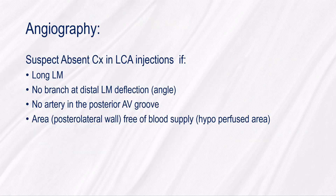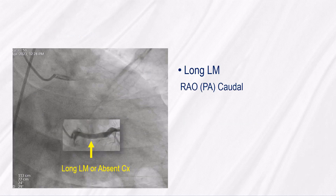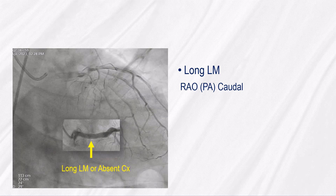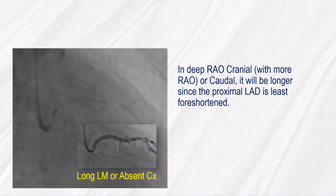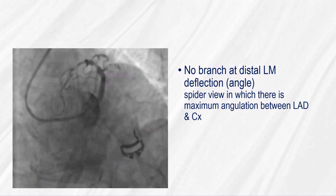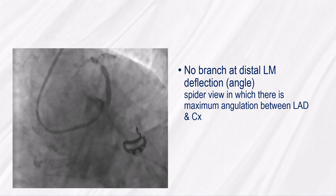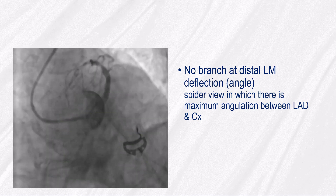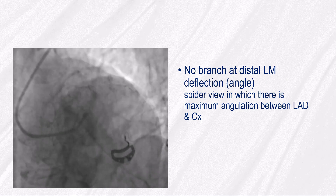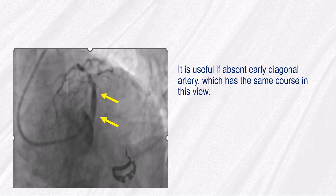In angiography, we suspect the absence of CX in left injections if one of the following is present: a long left main in RAO or PA caudal. In deep RAO cranial with more RAO or caudal, it will be longer since the proximal LAD is least foreshortened. It is also suspected when there is no branching at the distal left main deflection angle in the spider view, in which there is maximum angulation between LAD and CX. It is very useful if there is an absent early diagonal artery, which has the same course in this view.